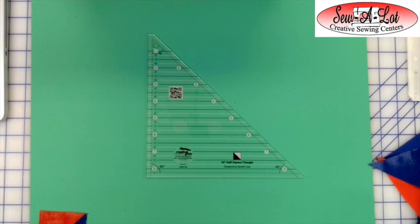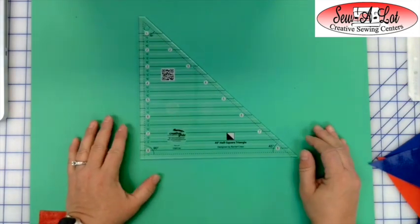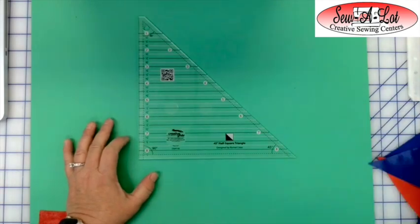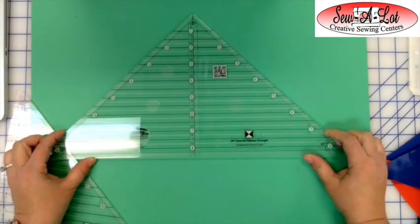Hi, this is Kim from Sewalot, and today we're going to talk about the Creative Grids 45 degree half square triangle and the Creative Grids 90 degree quarter square triangle.